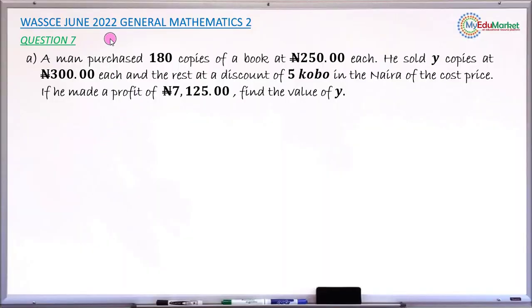This is WASSCE June 2022 General Mathematics Paper 2, and we are answering question number 7a.